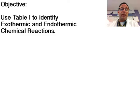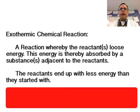So let's start out by defining them. An exothermic chemical reaction is a reaction whereby the reactants, typically written on the left, lose energy. This energy is thereby absorbed by a substance or substances adjacent to the reactants. So whatever is nearby will be what has to absorb the energy. It has to go somewhere. So the reactants end up with less energy than they started with.